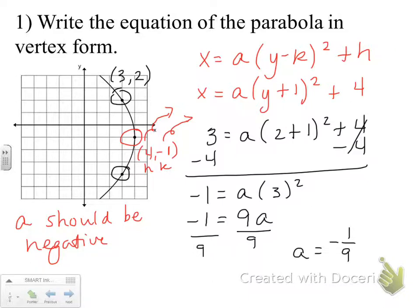And notice that this is a wide parabola. So our a value should be less than 1. So let's put these three pieces together into our nice finished equation. Remember, it's x equals negative 1 9th times y plus 1 squared, that's our k value, plus 4. Very nice work.